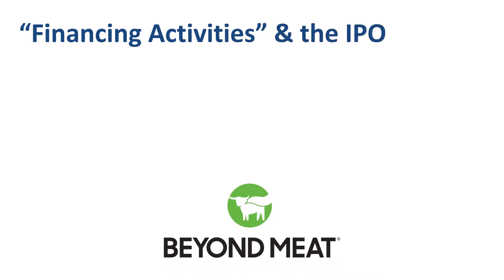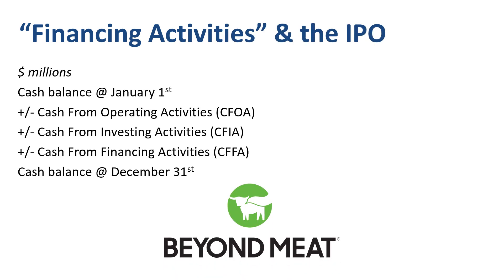Here is the cash flow statement for a company called Beyond Meat, a producer of plant-based meat substitutes. The company was founded in 2009, was privately held for nearly a decade, and then issued stock to the public through an initial public offering in 2019. By reviewing its cash flow statement for multiple years, you get an appreciation for the connections between the cash balance and the cash inflows and outflows in the operating, investing, and financing categories.